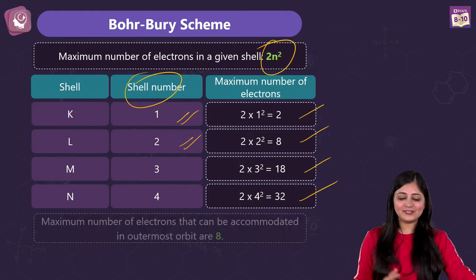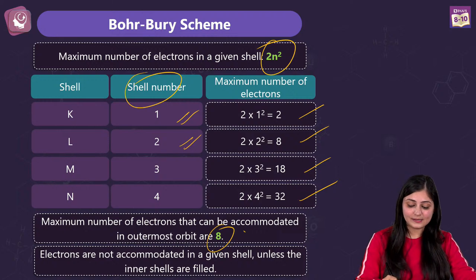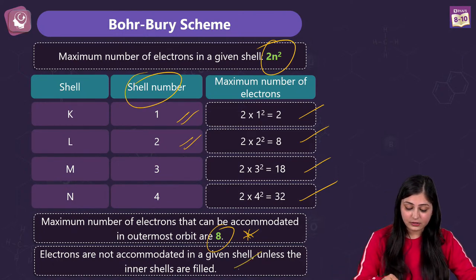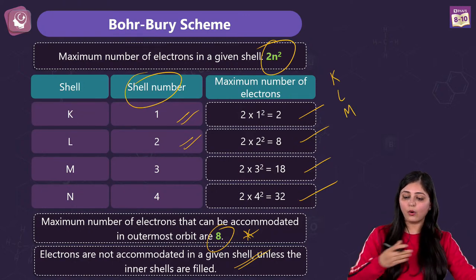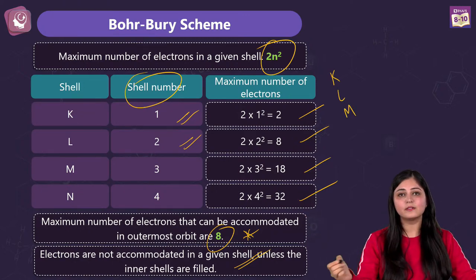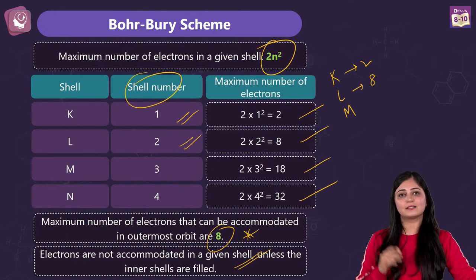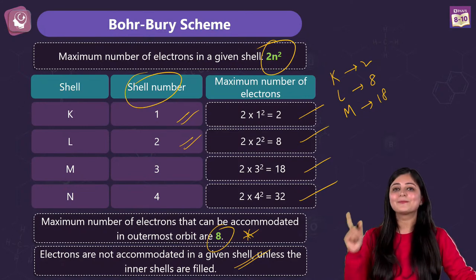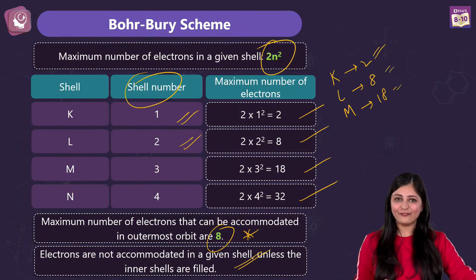Easy and simple — but we also need to remember that the maximum number of electrons that can be put in a shell if it's the outermost shell is going to be 8. That's a very important point. Also, electrons are not accommodated in a given shell unless the inner shells are filled first. Imagine a canteen scenario: K, L, M are standing in a queue, so K's order of 2 is taken first, then L's 8, then M's 18 — first come first served. Inner shells are filled first.